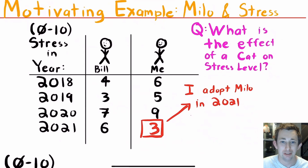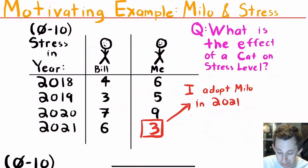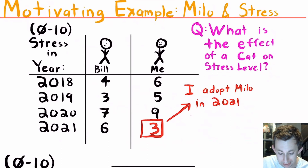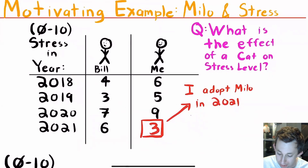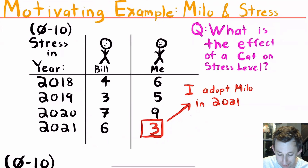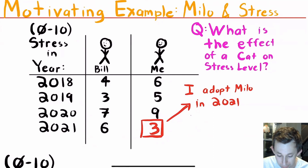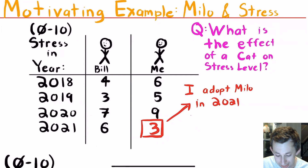We're going to talk about the effect of adopting a cat on stress level. Here are two people — it's going to be Bill and I — and you can see our stress levels measured from zero to ten by year: 2018, 2019, 2020, and 2021. In 2021 I adopt Milo, so my stress in 2018 was a six, 2019 it was a five, 2020 was a nine, and then in 2021 when I'm treated it becomes a three. We are trying to estimate this effect on stress level.